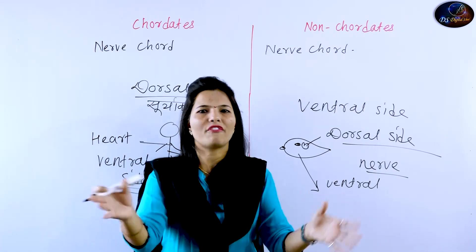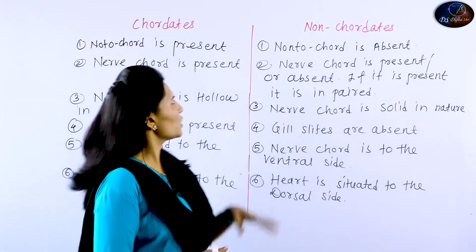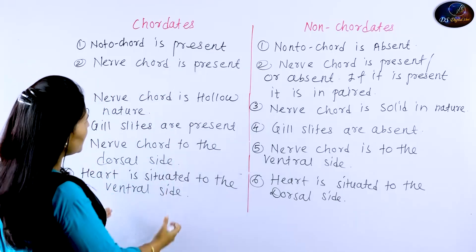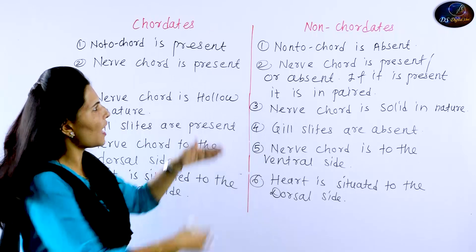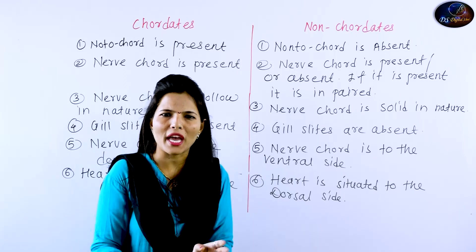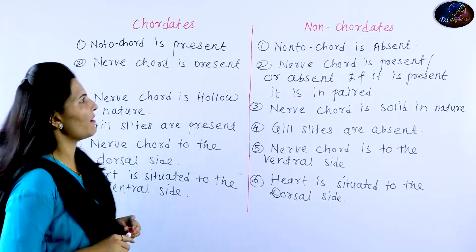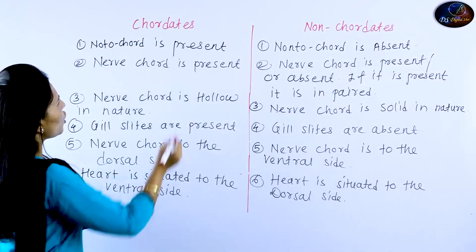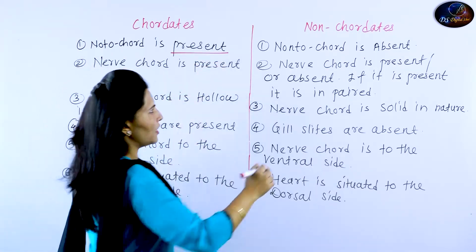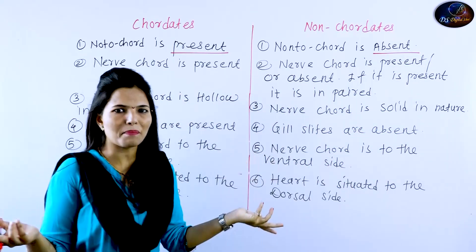Let's quickly revise what is the difference between chordates and non-chordates. Notochord is present in chordates. Notochord is absent in non-chordates. That is the key difference between them.